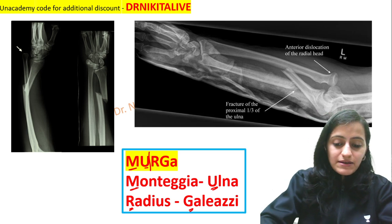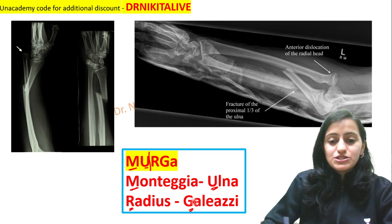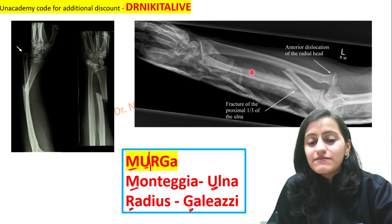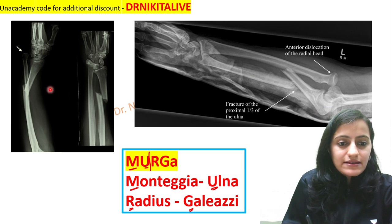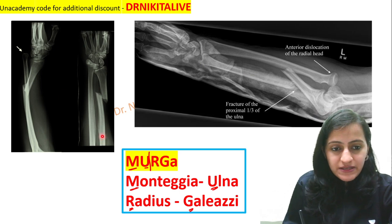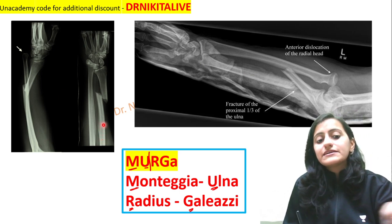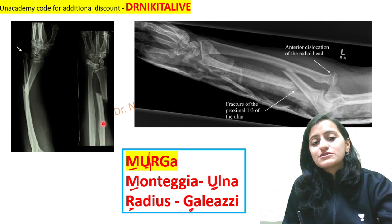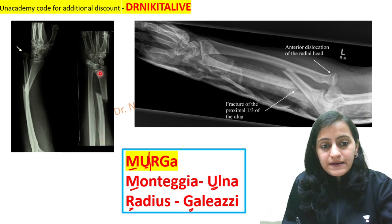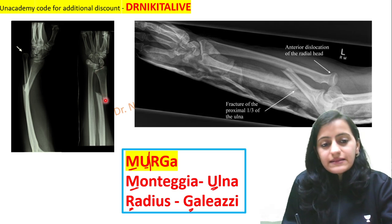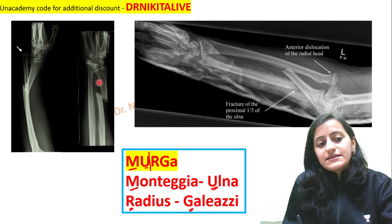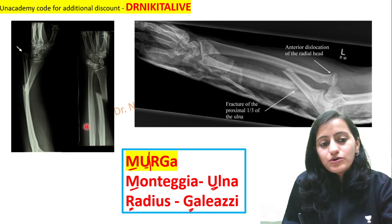Now look at the images and tell me which is Monteggia and which is Galeazzi. Let us have a look at the images here. How do we identify which is radius, which is ulna? The wider bone is the radius; the slender bone is the ulna.